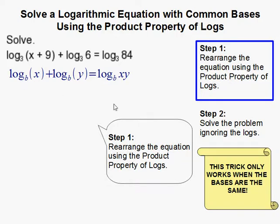The product property of logs states that when you have logs with common bases and you add them, you can multiply the values of the logs and then just kind of smush them into one log.